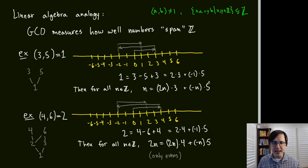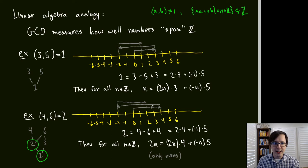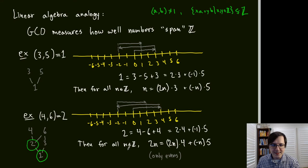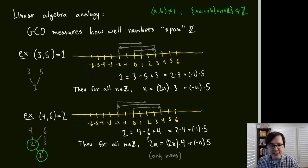Example 2: gcd(4, 6) = 2, since common divisors are 2 and 1. Going +4, −6, +4 gives 2 = 2×4 + (−1)×6. So we can get every even integer 2N as an integer linear combination of 4 and 6, but not odd integers.